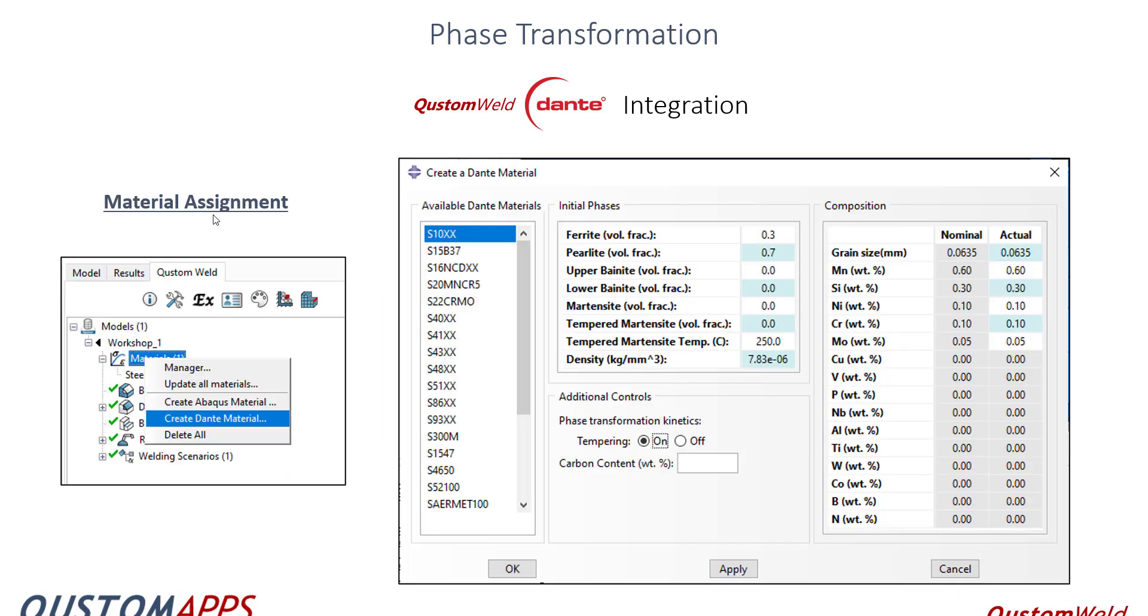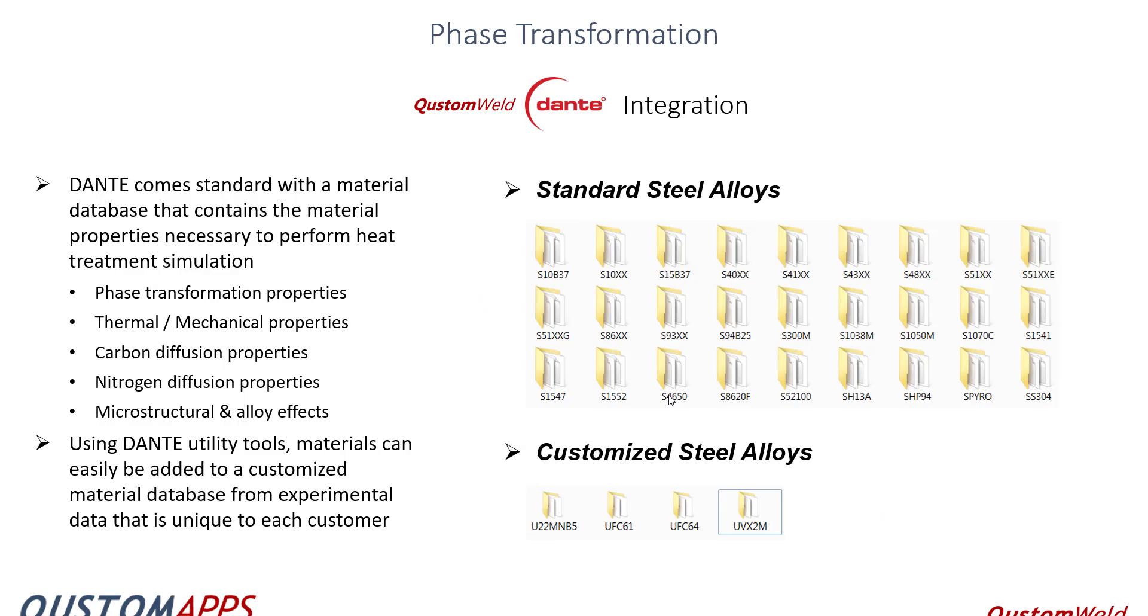The next thing we do is we create a material. When we're creating our weld model, we create a Dante material. We select a material and then custom weld will read your Dante installation and then pull out some information to get the default controls for a given material, like S10XX. It'll give the initial phases. It'll read the compositions, the grain sizes. And then the only thing you really have to fill in is the carbon content.